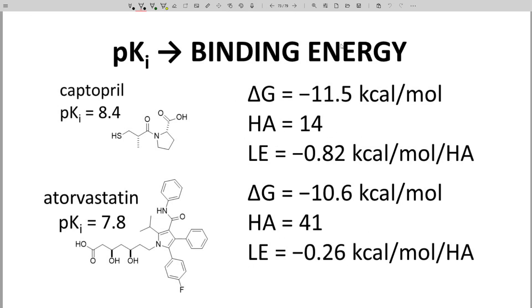On the screen are ligand efficiencies for two specific drugs. Both are extremely successful drugs. Captopril has a pKi of 8.4 and 14 heavy atoms. Atorvastatin has a pKi of 7.8 and 41 heavy atoms. The ligand efficiency of captopril is minus 0.82 kcals per mole per heavy atom.